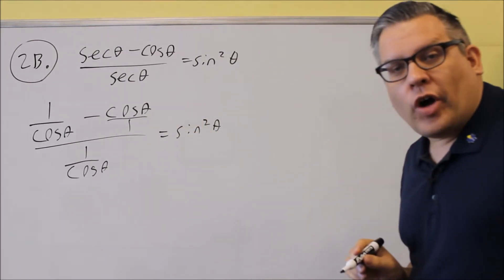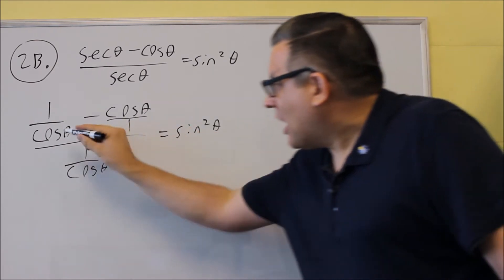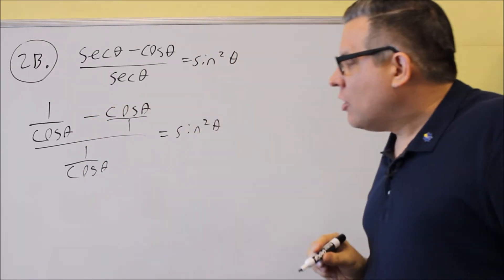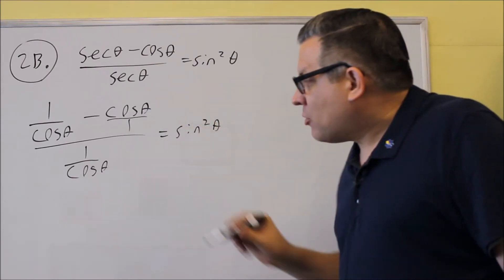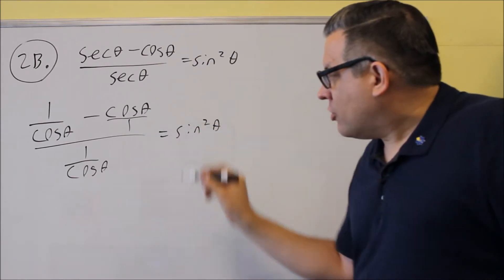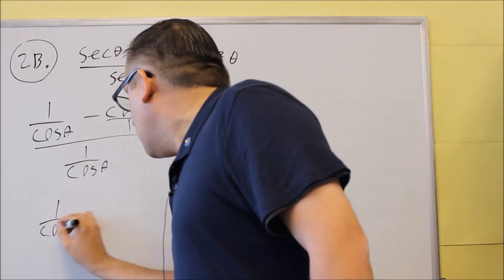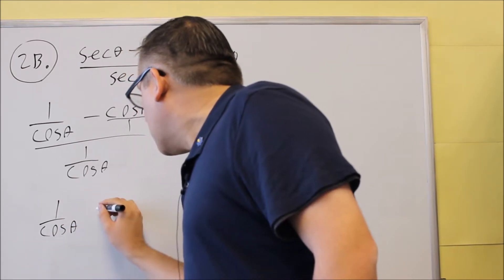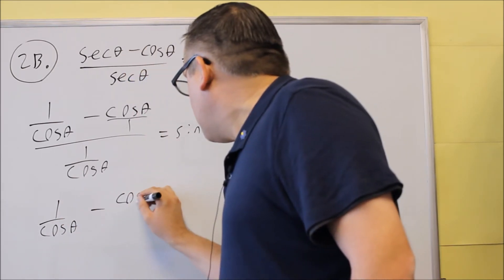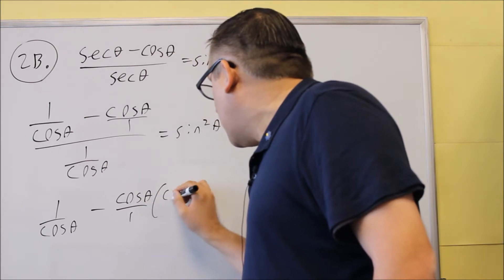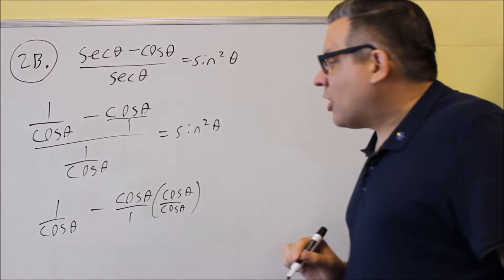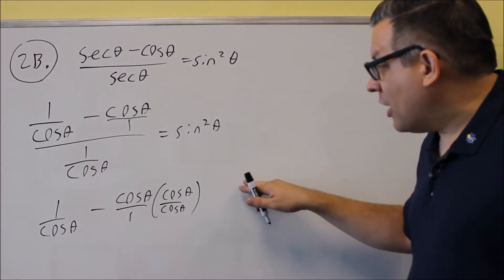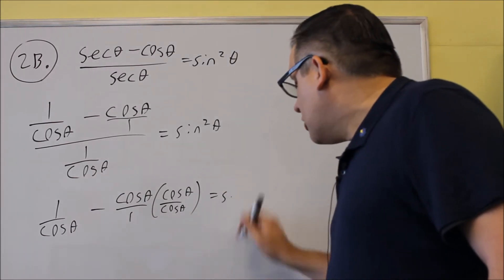and so that has a denominator of 1. So my common denominator on the top, if I'm just looking at the top fractions here, I want to get that to be common denominator of cosine. So what I'll do in the next step is I'm going to keep the 1 over cosine, and then this one I need to multiply it by cosine over cosine because I want to get the common denominators.